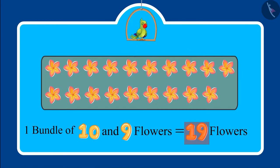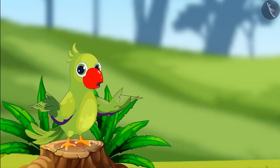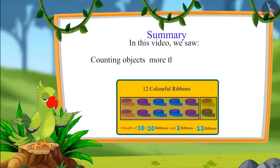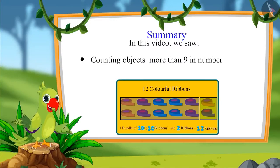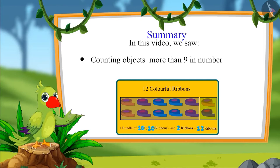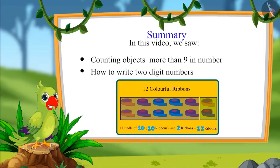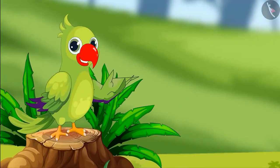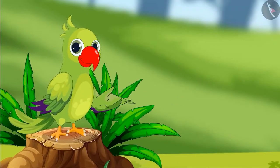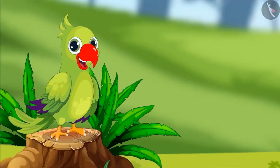That was all for today. In this video, we saw some more examples and common mistakes while counting objects more than nine, and also saw how to write two-digit numbers. I hope you have understood this topic very well. Bye friends.